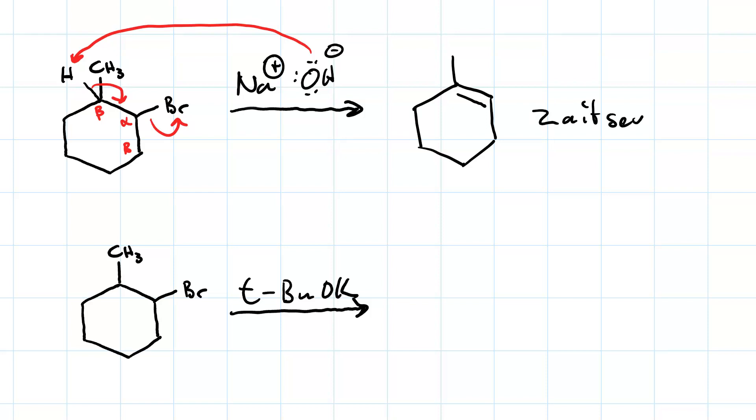With tert-butoxide, it's the bulky base that's going to do a Hoffman elimination. In other words, it's going to take one of the less substituted beta protons. So there's a proton transfer.